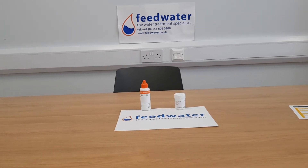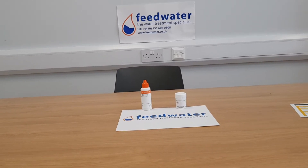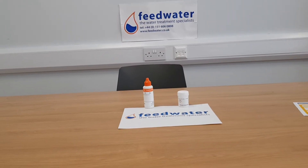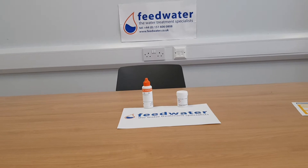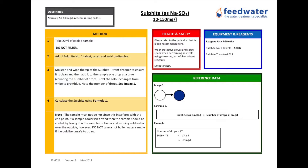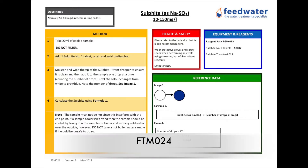Today we're going to demonstrate a field test method for measurement of sulfite in water samples, typically from steam generating boilers. This is a titration method and the reference code for this method sheet, should you need to request it, is FTM024.